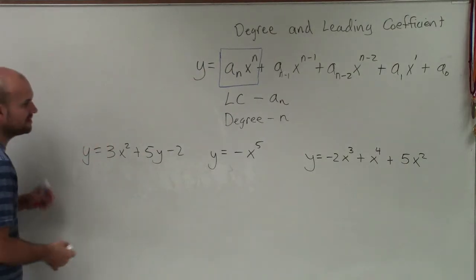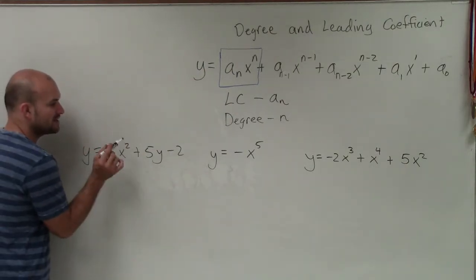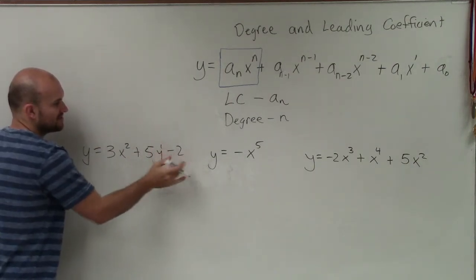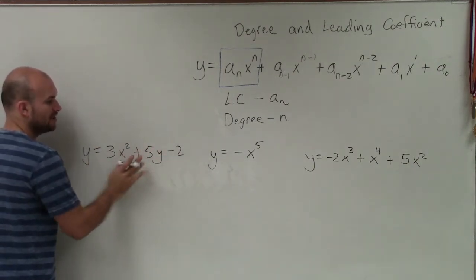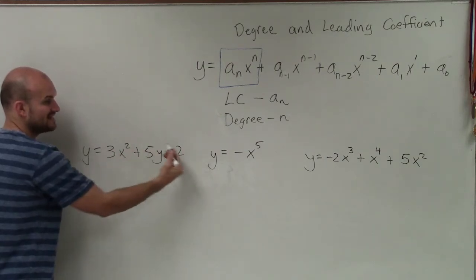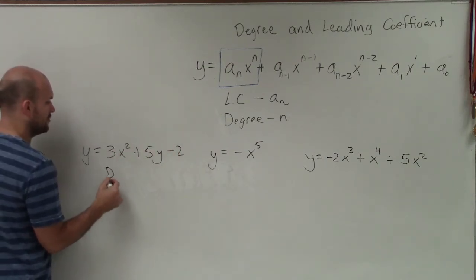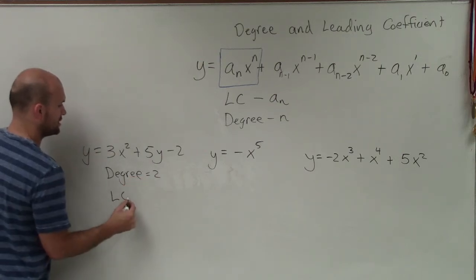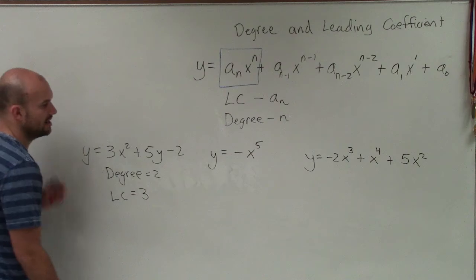OK, so on the first one, we notice that this x squared is our largest exponent, right? Because this would be an x to the first, and we could write an x to the 0, but we don't have to. So therefore, this is what we call a polynomial that's in our standard form in descending order of its exponents. Therefore, we can say the degree is going to equal 2, and our leading coefficient is equal to 3.